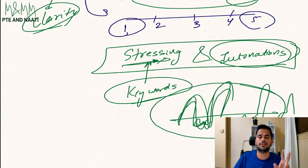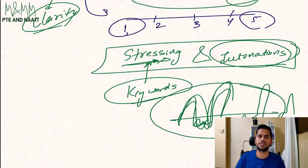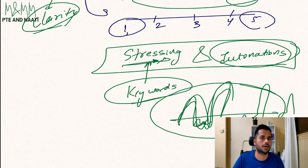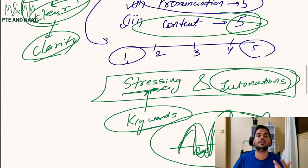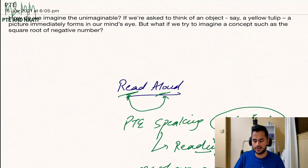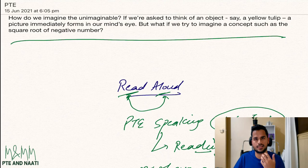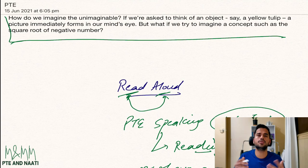Now let's see how we use all these things in a paragraph. For example, I have this paragraph — this is not something created by me; this is an actual exam paragraph that has appeared many times in the last five years.